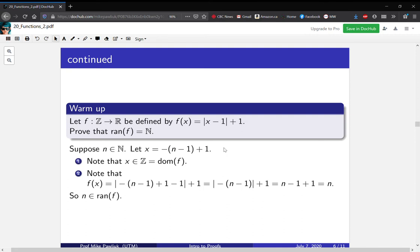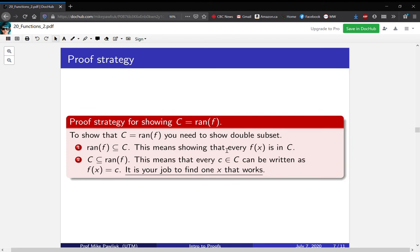Let's capture this in a proof strategy. If you're trying to show that C = ran(f), you need to show double subset. The first one is that ran(f) ⊆ C. This means that if you have an f(x), you need to show that it's in C, so it satisfies the defining property of C. This is usually the easier direction.